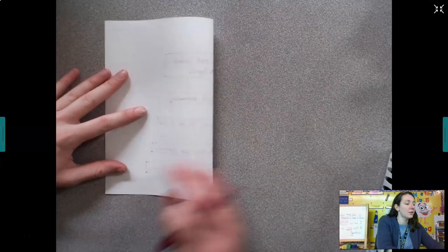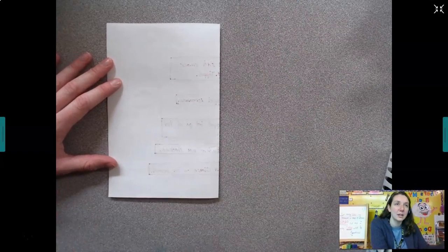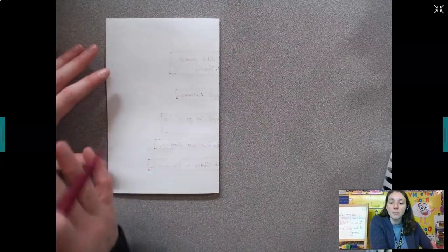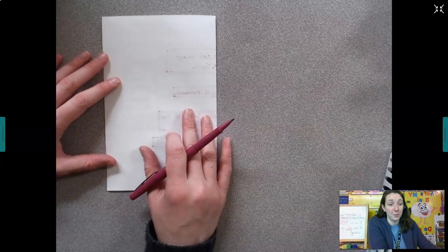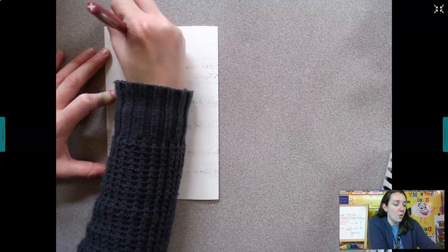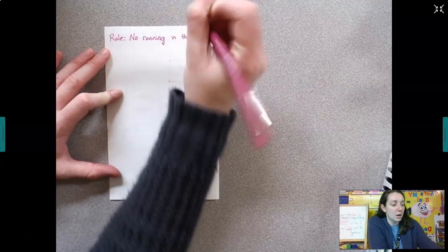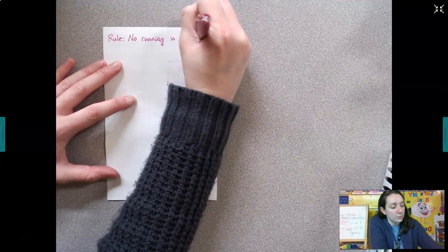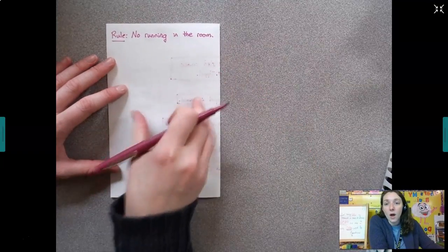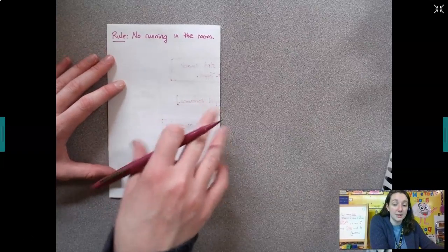on the back, I want you to think of a school rule that you need to follow. I know you are at home right now, but in normal years, what's a school rule you need to follow? Or even a rule you need to follow at home and draw a picture of what would happen if you didn't follow that rule. So I'm going to think about rule no running in the room. That would be what would happen. What would the effect be if I did not follow that rule?